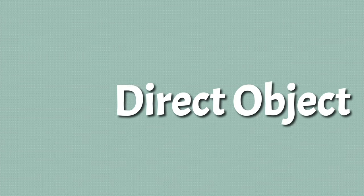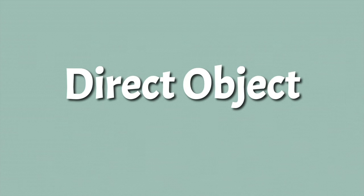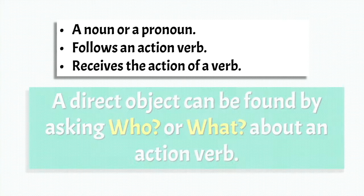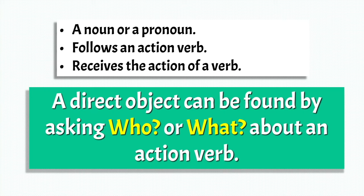Let's start with direct object. So it is a noun or a pronoun. It follows an action verb and it receives the action of a verb in a sentence. A direct object can be found by asking who or what about an action verb.